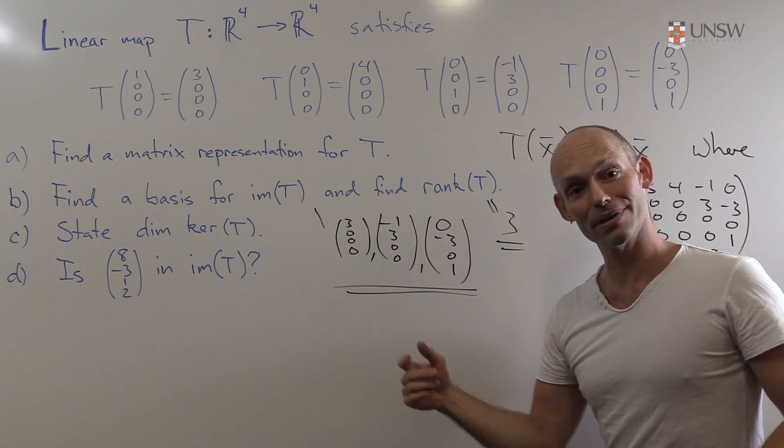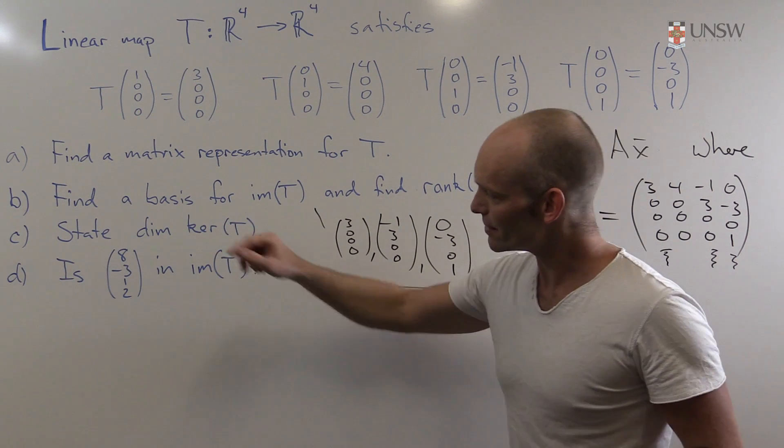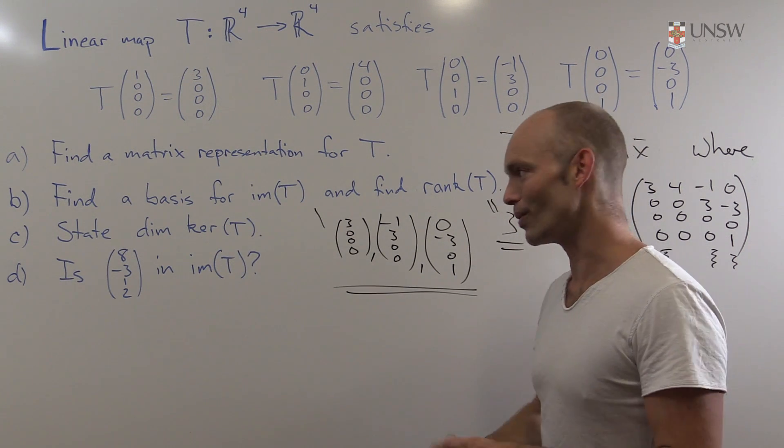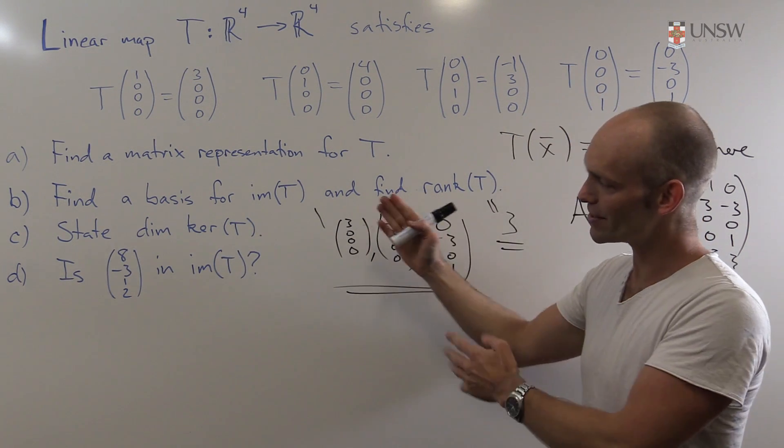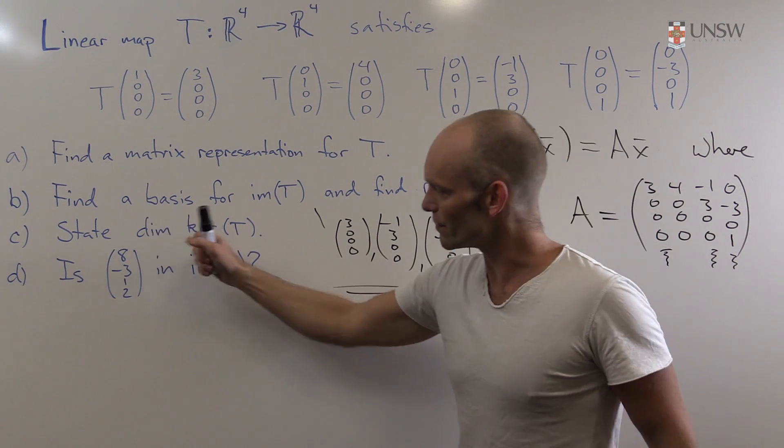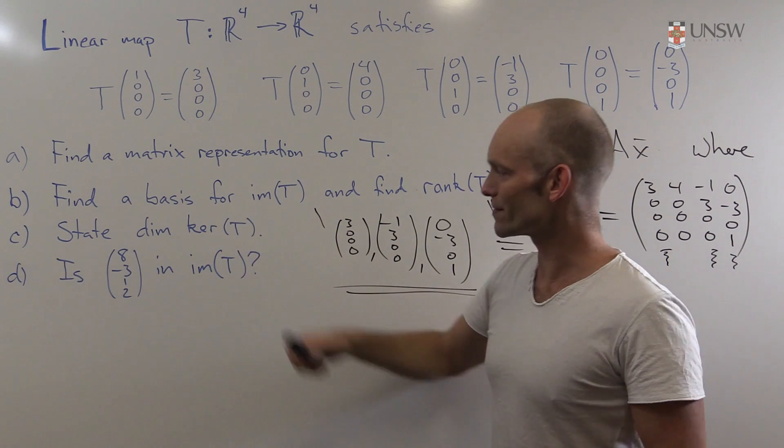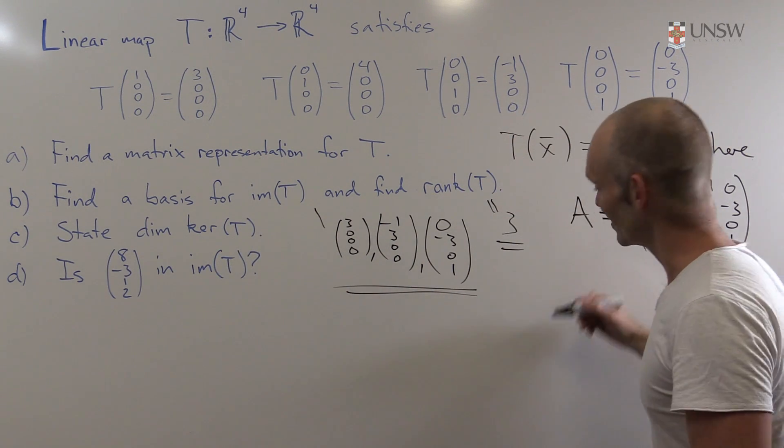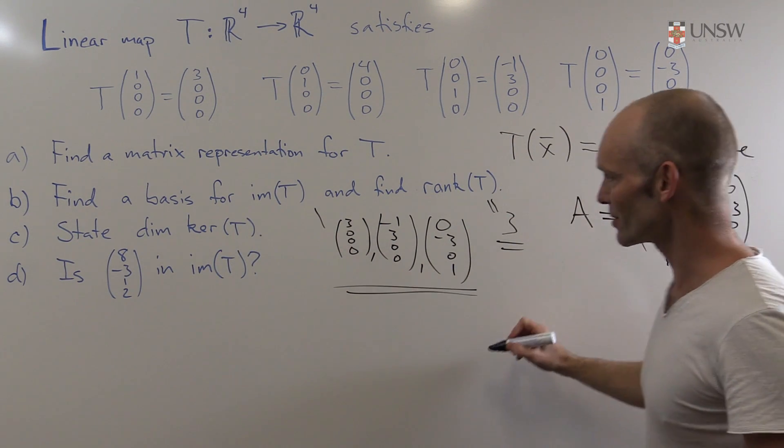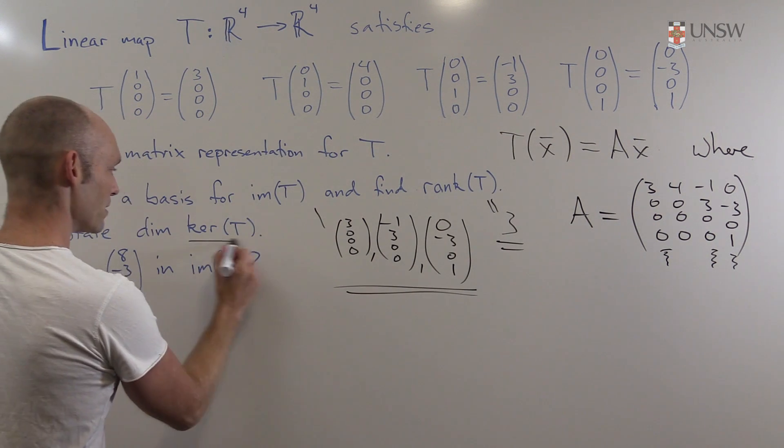Okay. Parts a and b done. Cool. State the dimension of the kernel of T. Ah, once again we have to figure out, what are we actually asking? We've got a dimension of something, which is presumably a vector space as well. So the kernel of T, well, you might remember, hopefully, that that's the solutions for the kernel here.